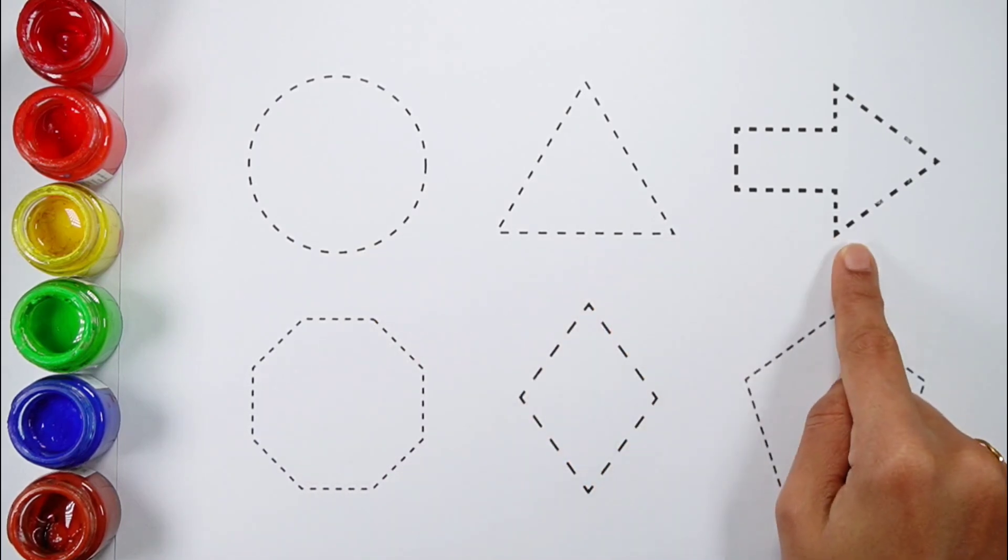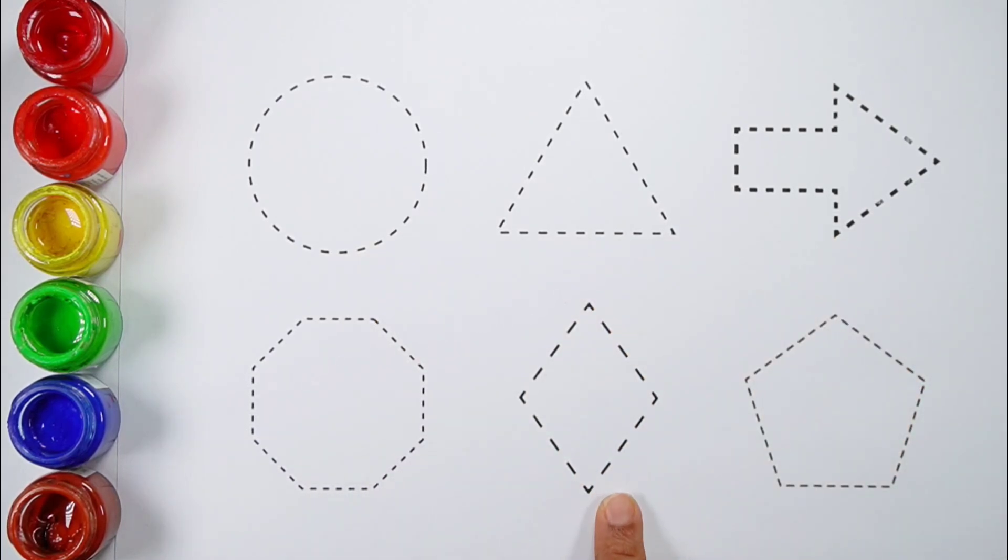Circle, Triangle, Arrow, Octagon, Rhombus, Pentagon.